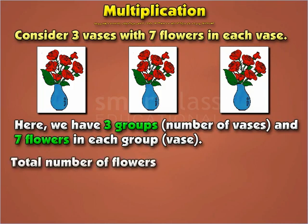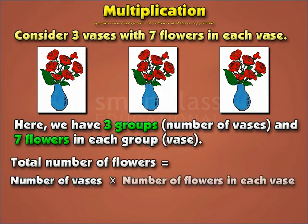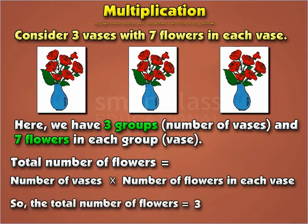The total number of flowers is equal to the number of groups, i.e., vases, multiplied by the number of flowers in each group, i.e., each vase. So three into seven is equal to twenty-one.